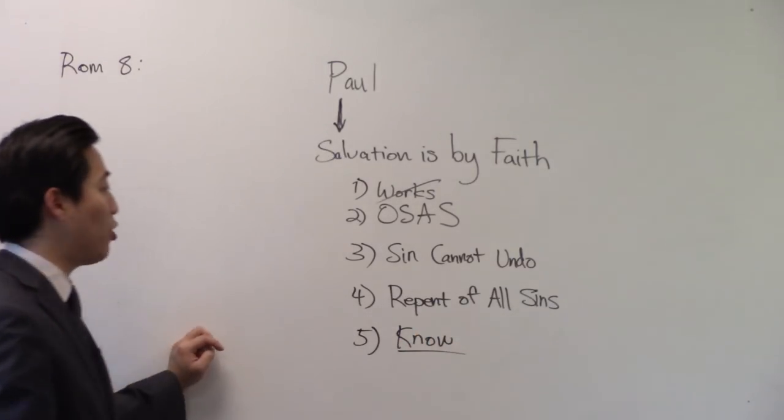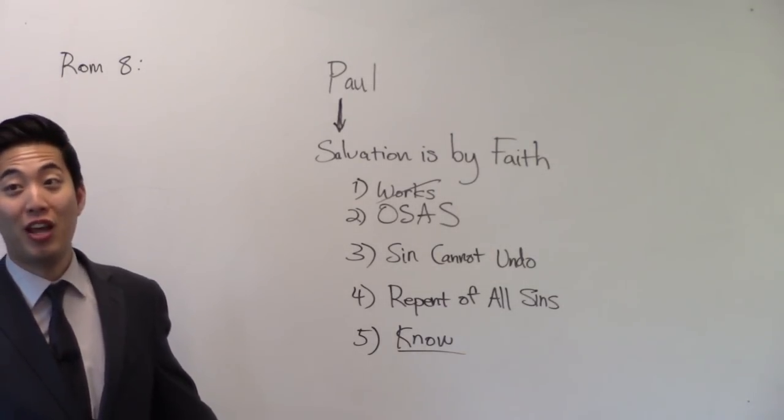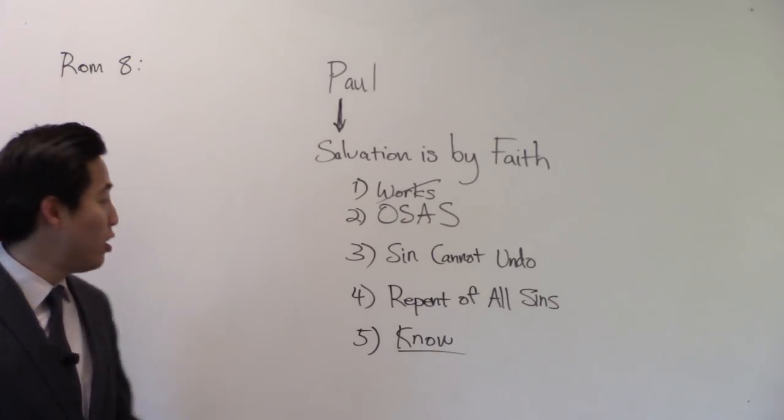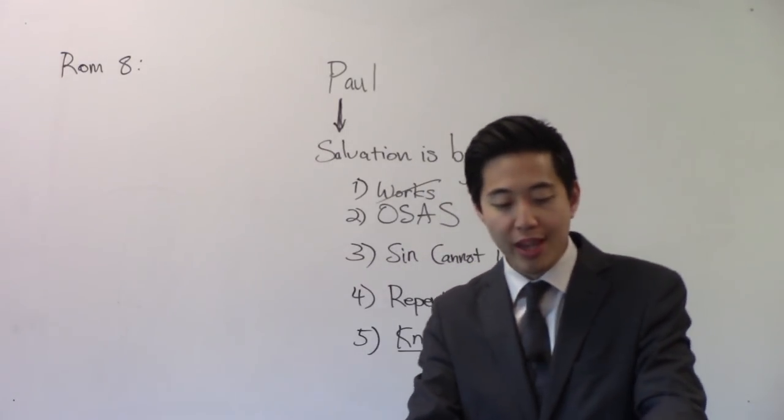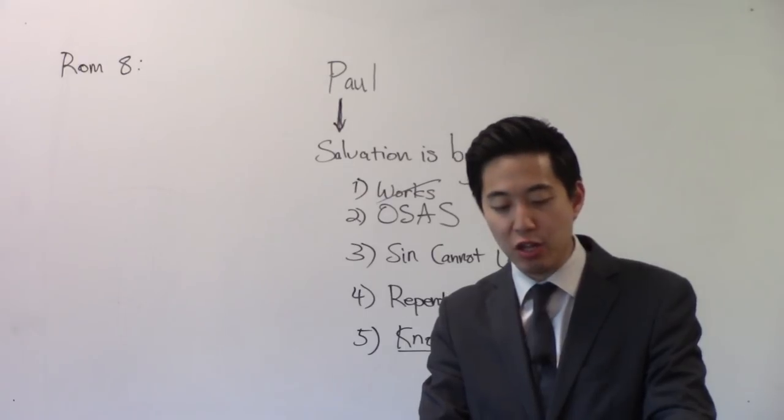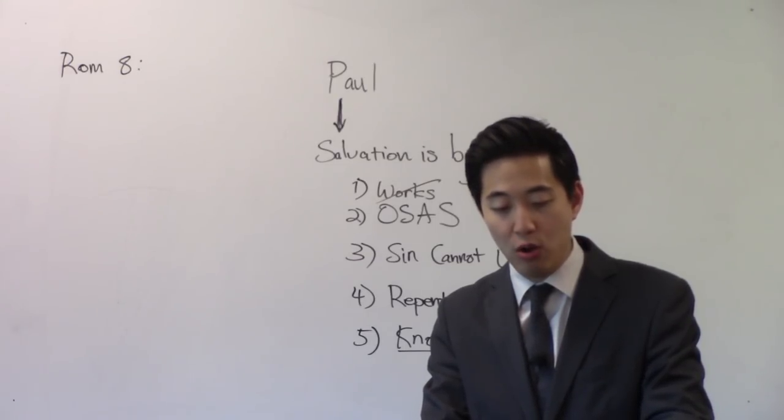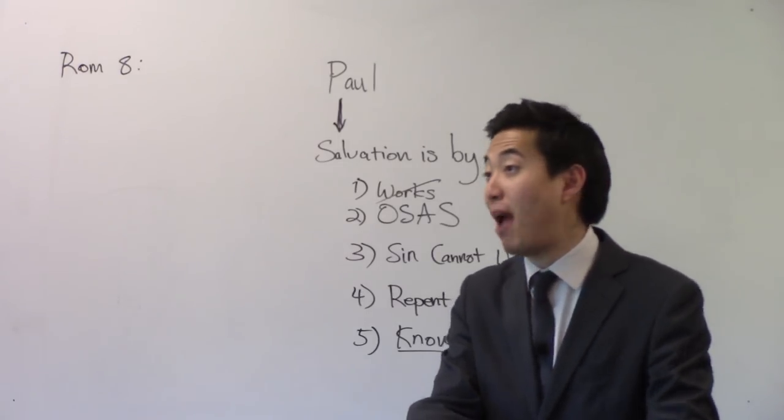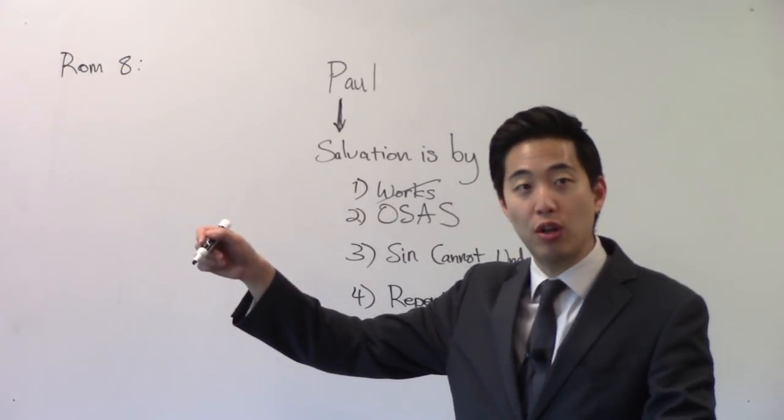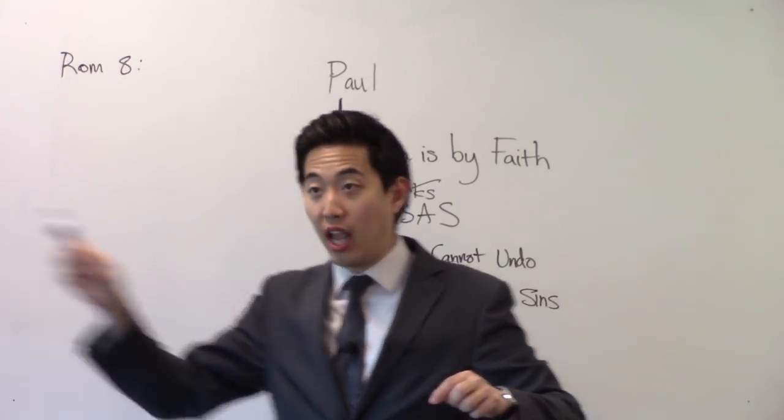Catholics teach you can never know if you're saved. If you're of lordship salvation, sometimes you doubt and worry. Notice in Romans 8, for I am persuaded. So Paul knew that neither death nor life, see anything you do in this life can't condemn you, nor angels, see the angels can't accuse you, nor principalities, not even the principalities, nor powers, things of this world, nor things present, nor things to come. It doesn't say past. It says present and future. Why? Because after you get saved, nothing you do right now or in the future can undo your salvation.